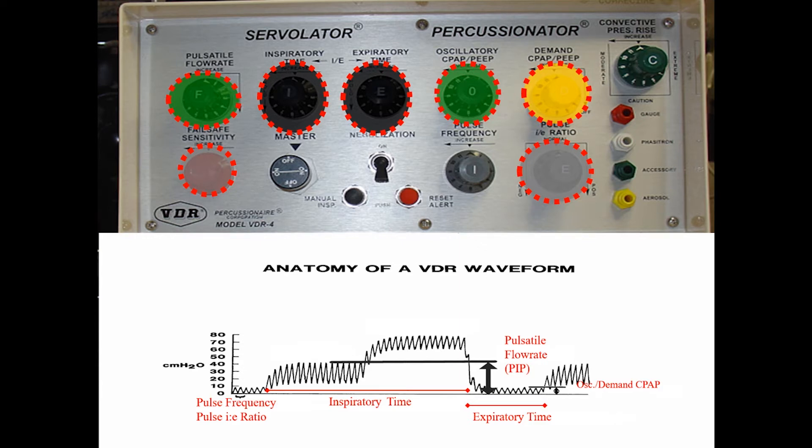There is a third flow that can be delivered with the ventilator. So there is an inspiratory flow called pulsatile flow rate. There's expiratory flow called oscillatory CPAP. And then there's convective pressure rise. Convective pressure rise accelerates that flow the most of the three flow patterns and can only be delivered after the first second of inspiratory time. In general, I use this less than 10% of the time in my patients. I can kind of think of it as a recruiting flow.